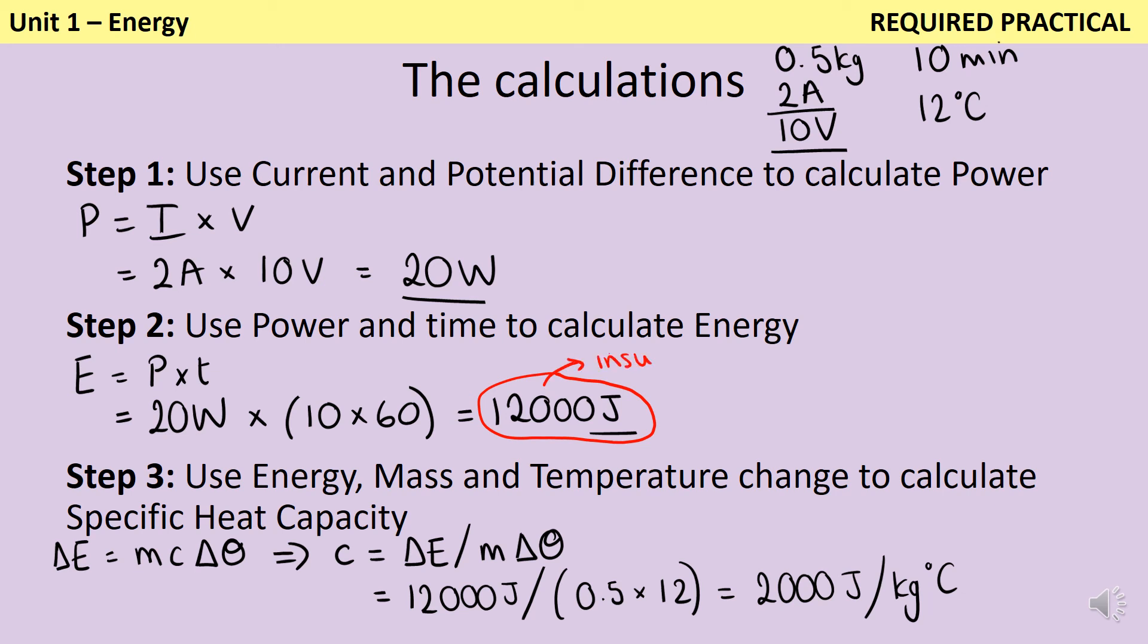You saw when we set up the experiment that we added insulation, and that was there to minimize energy losses to the environment. But it's not going to completely stop them. You saw that my metal block didn't have any insulation on the top of it at all, so it's going to lose a huge amount of heat energy that way. And it's just not possible for us to prevent heat losses to the environment. The second thing is that the heating element itself may not have perfect thermal conductivity. So it's going to take a little while for any energy that gets into it to get into the metal block. This is going to be even worse if we're looking at the specific heat capacity of a liquid.